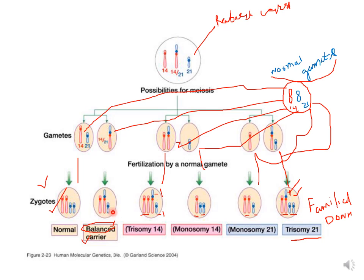A balanced carrier has at least balanced genes. The next progeny shows trisomy of 14th chromosome — there are three copies of chromosome 14 while chromosome 21 is normal with two copies, one on the translocated part. The fourth progeny is monosomic because it is short one copy of chromosome 14. The fifth progeny is monosomic due to one fewer 21st chromosome. The last progeny is familial Down syndrome, because the third copy of chromosome 21 is present on the 14th chromosome.